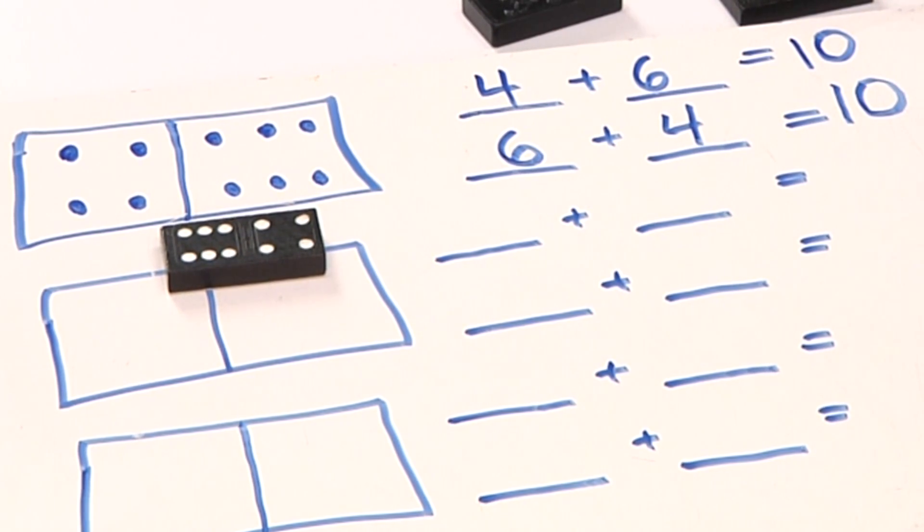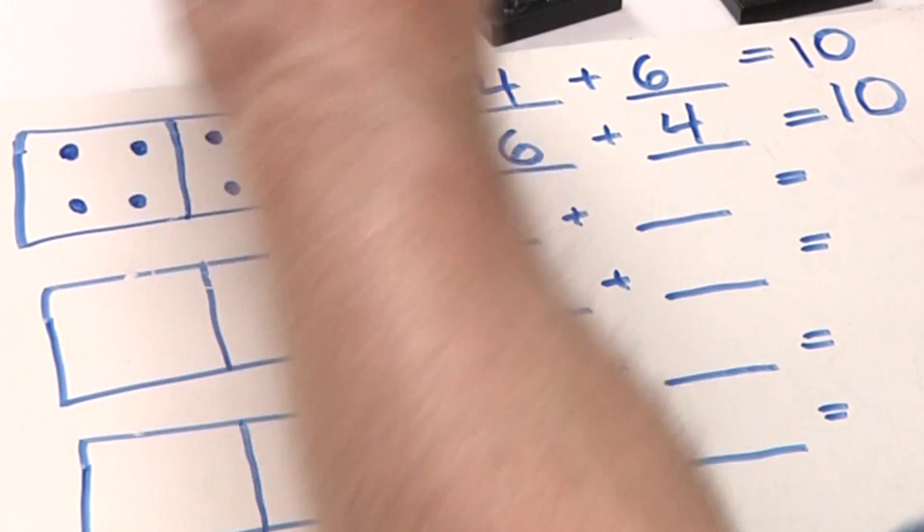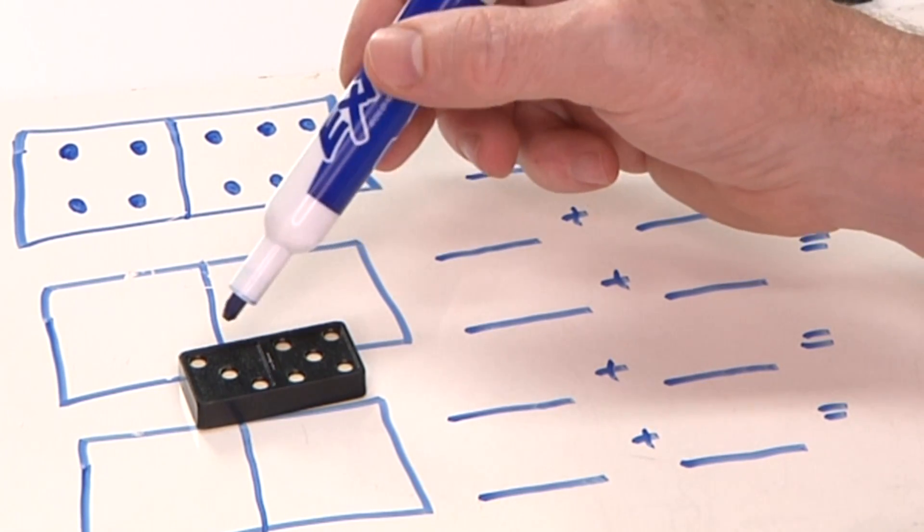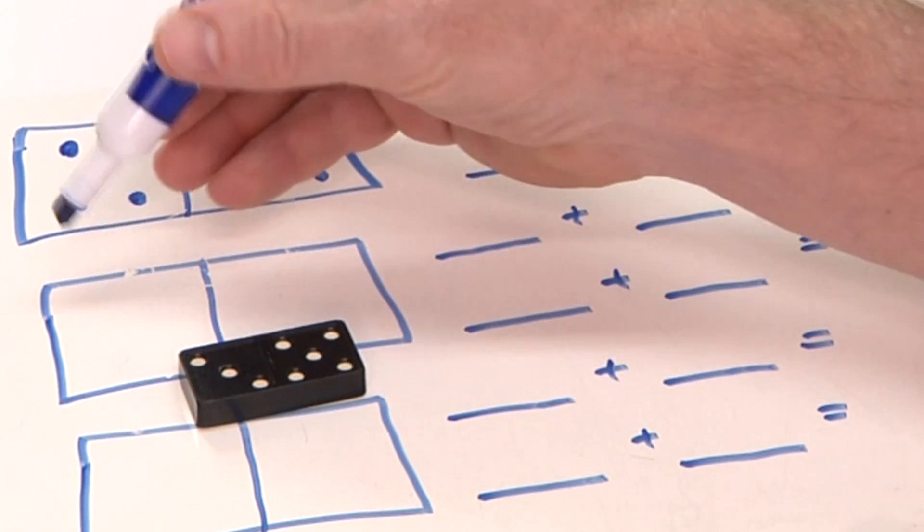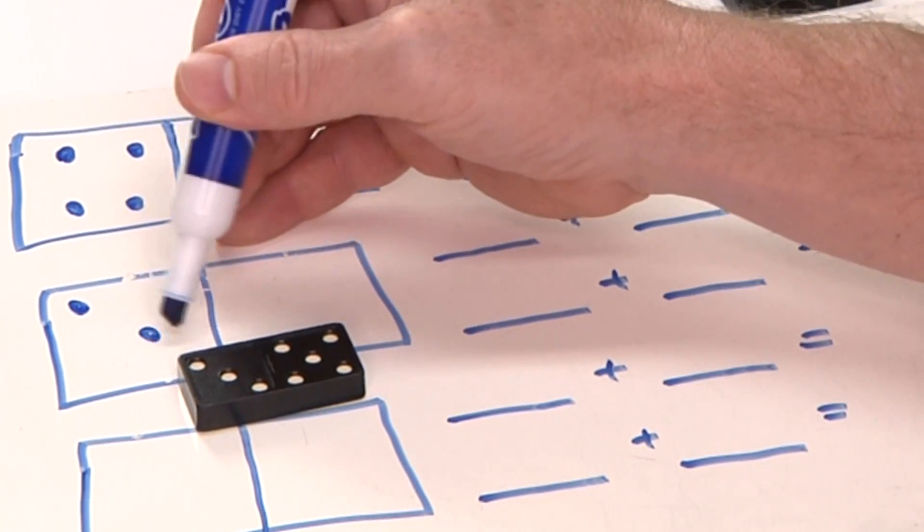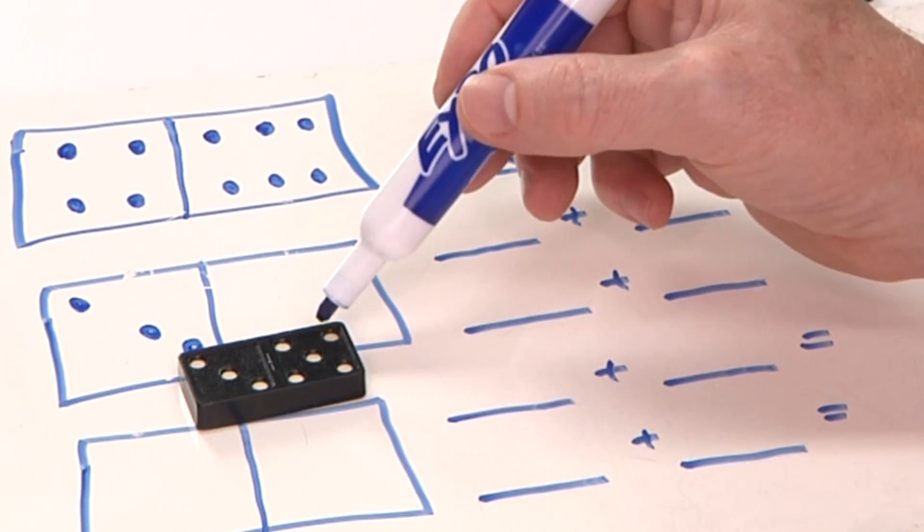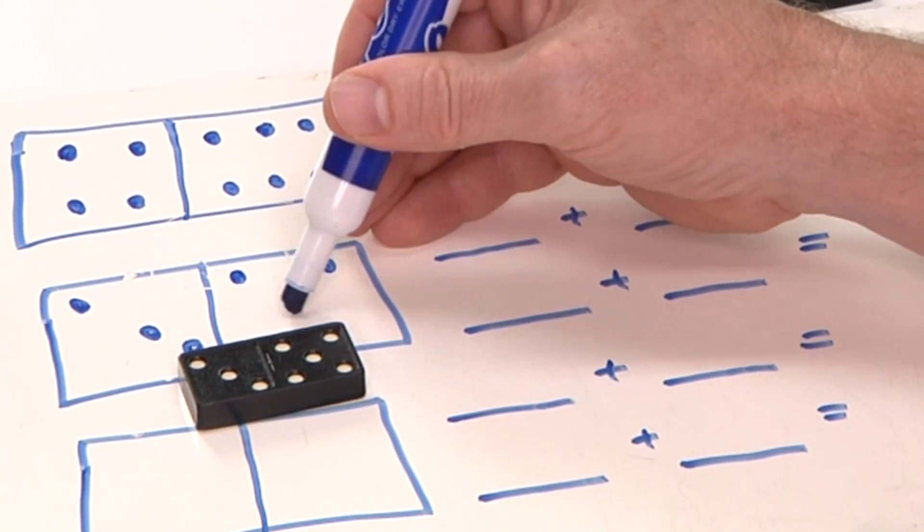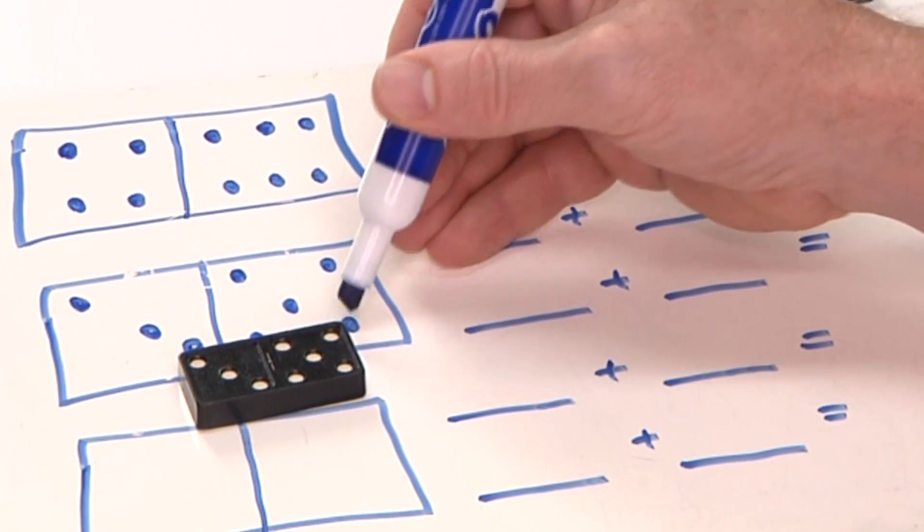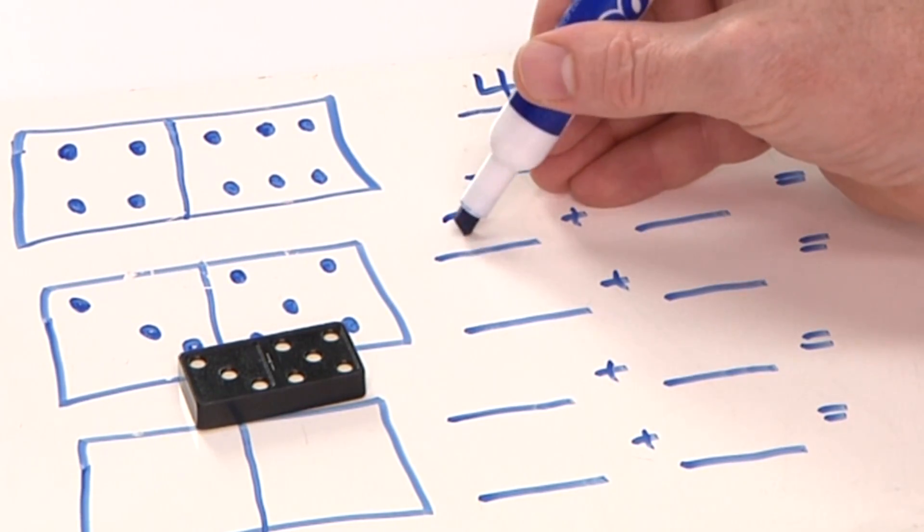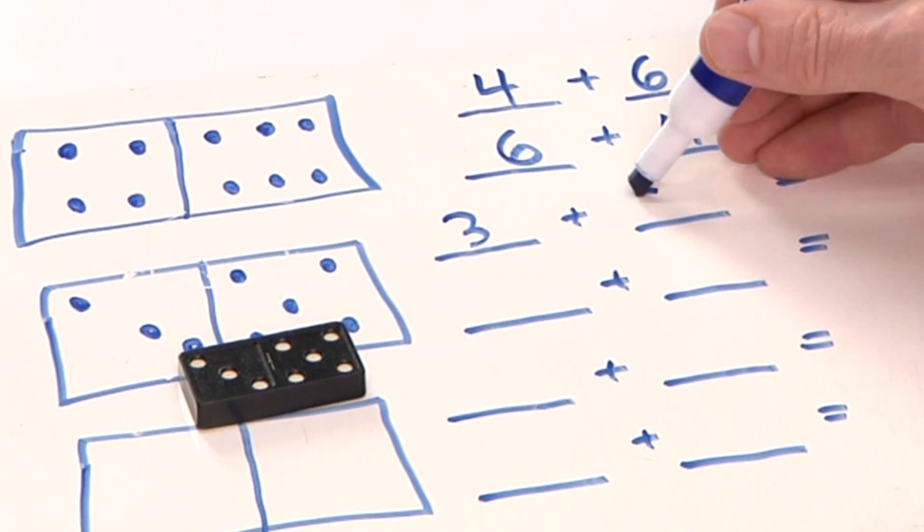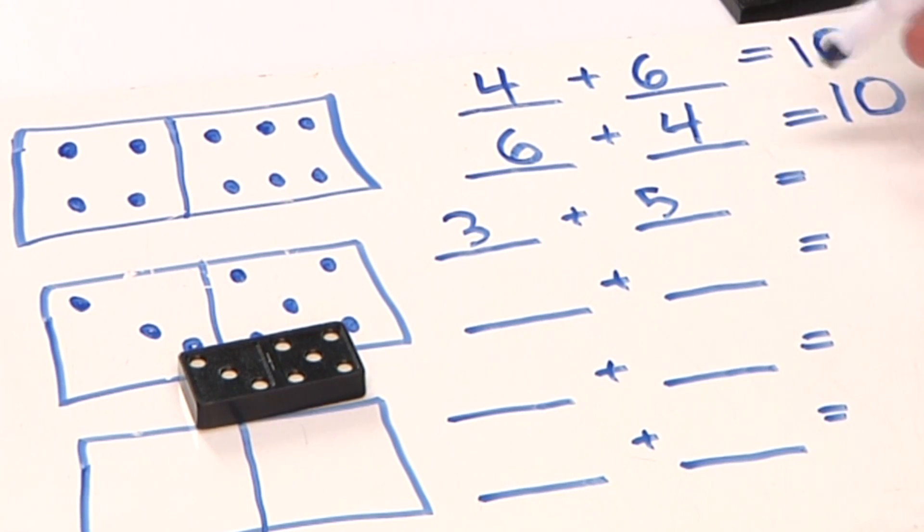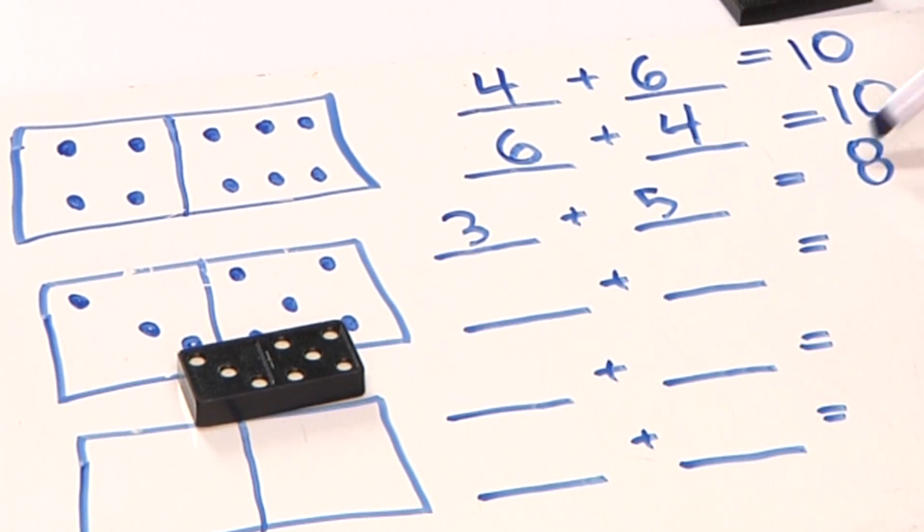Let's try another one. Can you see how many dots there are right here? Can you count them? Right, 3: 1, 2, 3. And can you count these? Correct, there are 5: 1, 2, 3, 4, 5. So I put 3 right here and the 5 right here. These are the two addends, so 3 plus 5 equals 8.